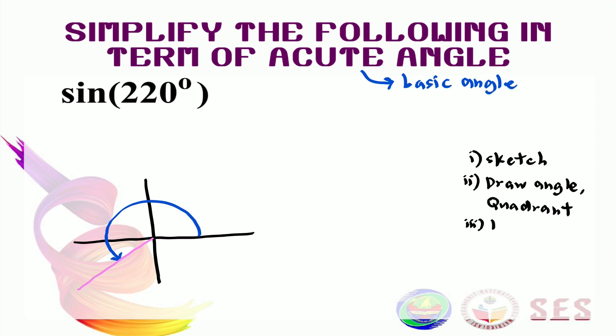The third thing to do is to find its basic angle. Our basic angle lies here. Remember the angel? Since we know that this is 180 degrees and this is 220 degrees, this basic angle here must be 40 degrees. So our basic angle here is 40 degrees.